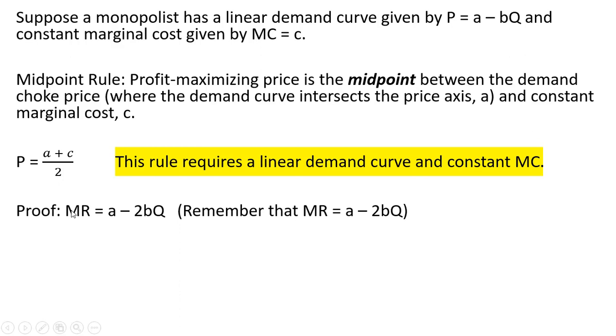The proof: let's get marginal revenue. I'm doing the shortcut rule here. Marginal revenue is nothing more than the inverse demand, this price equation, with a slope that is twice as steep. So instead of minus bQ, it's minus 2bQ. That's marginal revenue. We'll set marginal revenue equal to the constant marginal cost c.